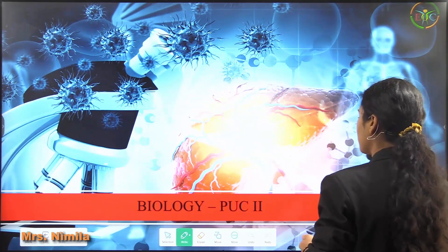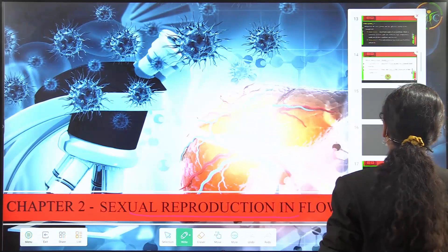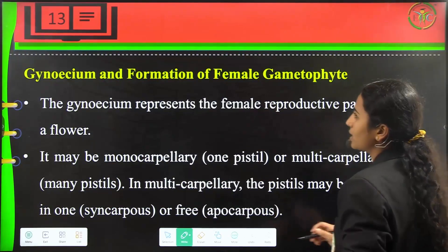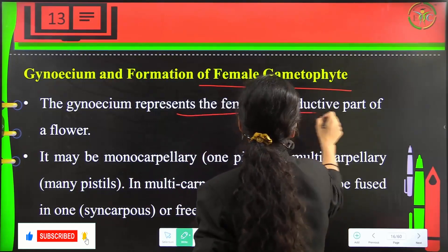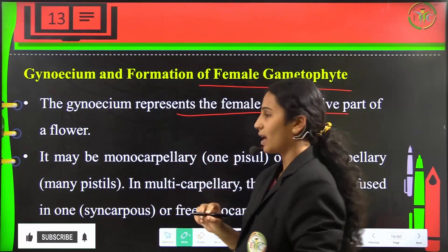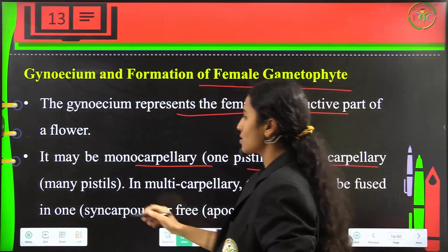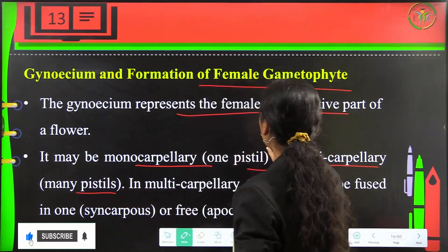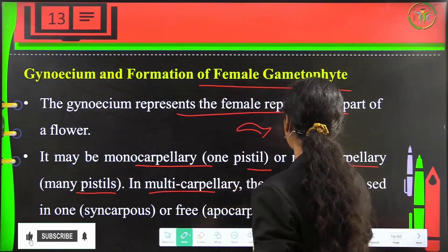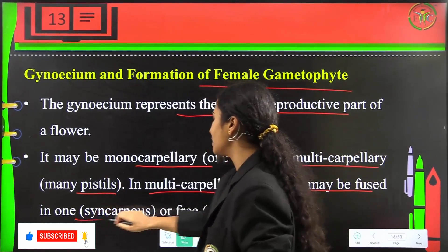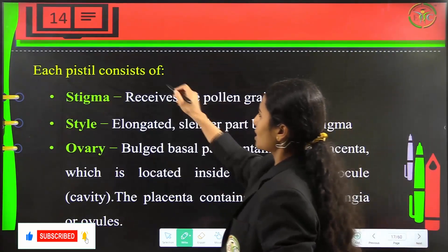The gynoecium represents the female reproductive part of a flower. It may be monocarpellary, which is one pistil, or multicarpellary, which consists of many pistils. In multicarpellary condition, the pistils are either fused as syncarpous or free as apocarpous.